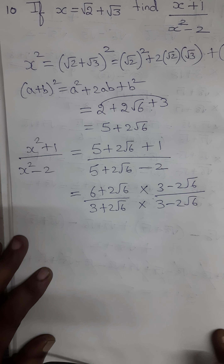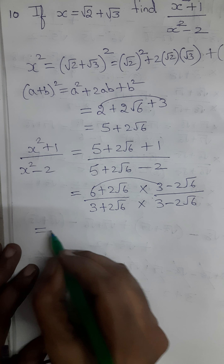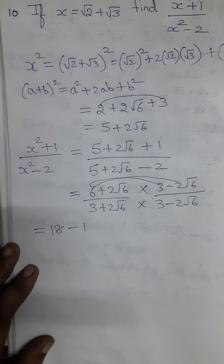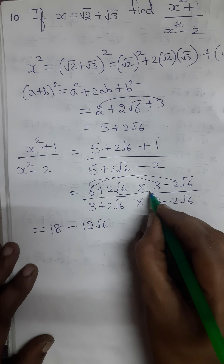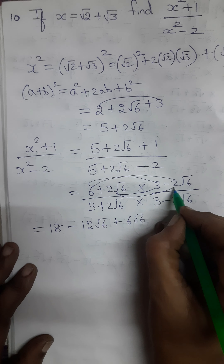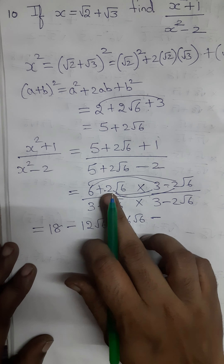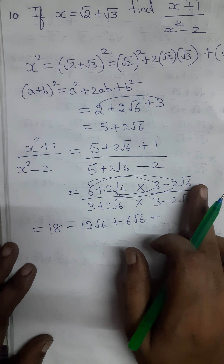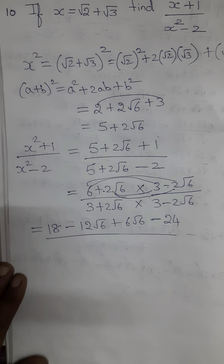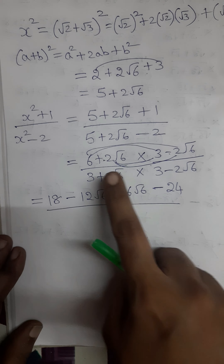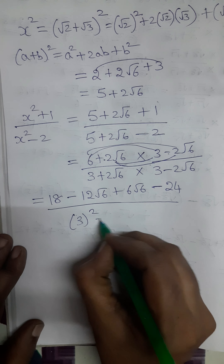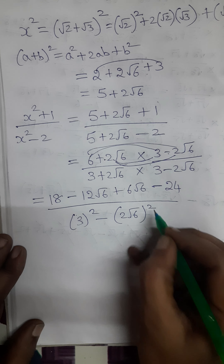Multiplying the numerator: 6 into 3 gives 18, 6 into minus 2√6 gives minus 12√6, 3 into 2√6 gives 6√6 (with plus giving minus), and minus 2 into 2√6 into √6 gives minus 4·6 = minus 24. For the denominator, using (a + b)(a - b) = a² - b²: 3² minus (2√6)².